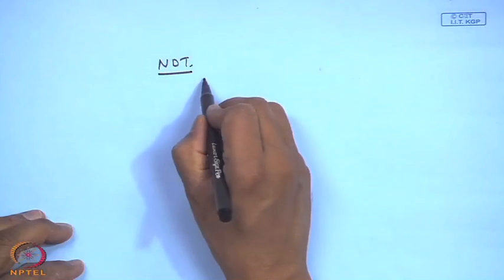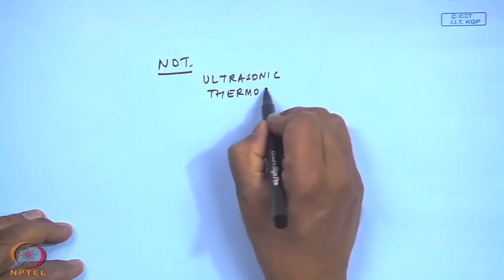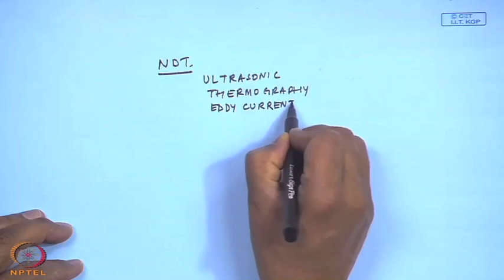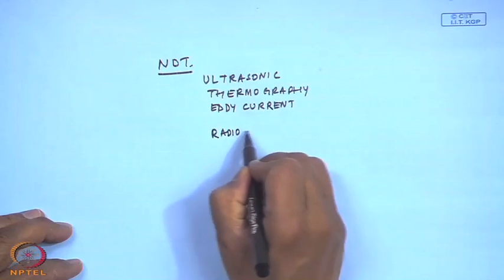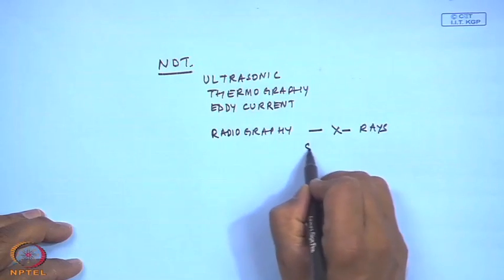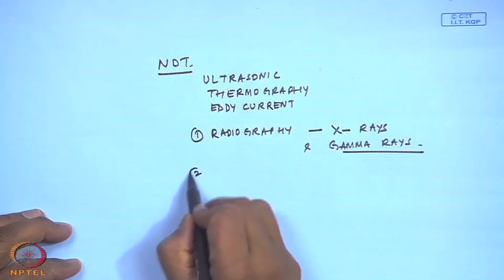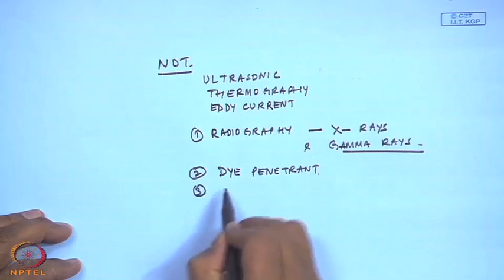Radiography is otherwise also known as the x-ray technique. To recap, in NDT we had also looked into ultrasonic, thermography, eddy current, and today we will be looking into radiography, which is nothing but x-rays and gamma rays, and then of course dye penetrant and visual inspection.